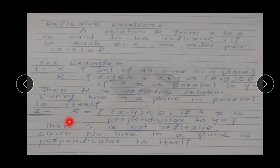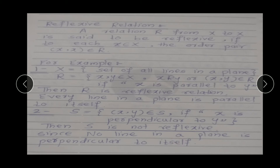But, अगर हम दूसरा relation लेंगे: S = {(x, y) belongs to S if x is perpendicular to y}. अब यहाँ पर हमारा relation S यह है — यहाँ पर हमने collect किया है दो perpendicular lines को. Then S is not reflexive, हमारा यह relation reflexive नहीं है, क्योंकि no line in a plane is perpendicular to itself. Perpendicular means वो 90 degree का angle form करेगी, लेकिन कोई भी line खुद के साथ 90 degree का angle form नहीं कर सकती है. Means हर line खुद से related नहीं है. So, it is not a reflexive relation.